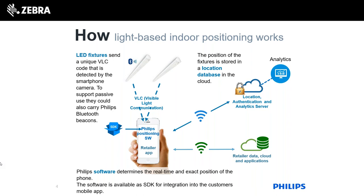Typically, in a retail store, at any one time the camera of the device will be able to see multiple light fixtures which are transmitting codes. It will therefore be able to see two or three light fixture location codes. Based on a map that's been preloaded on the device, you can know exactly where you are based on seeing those location codes. It can work down to 30 centimetres, so you get really accurate positioning indoors. You can then use that location for lots of different applications.